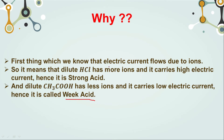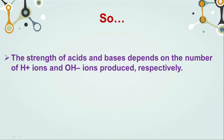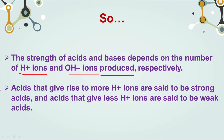Since electric current flows due to ions, dilute HCl with more ions allows more current to flow and is known as a strong acid. CH3COOH has fewer ions and allows less current to flow, hence it is a weak acid. The strength of an acid or base depends on the H+ ions and OH- ions produced respectively. Acids that give rise to more H+ ions are strong acids, and acids that give fewer H+ ions are weak acids. Remember this.